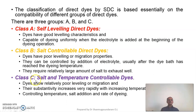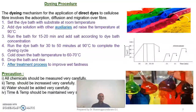Finally, the Class C dyes — these are salt and temperature-controllable dyes. These dyes show relatively poor leveling and migration. Their substantivity increases by controlling temperature and salt during the dyeing process, so both salt and temperature must be controlled during the dyeing of Class C direct dyes. The dyeing mechanism for direct dyes involves three steps: first adsorption, second diffusion, and third migration during the dyeing of cotton material.